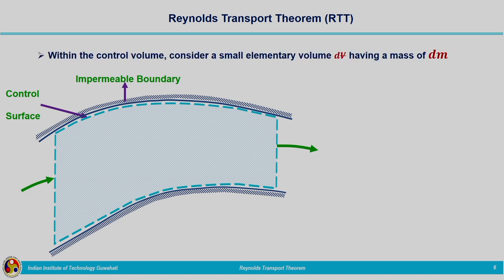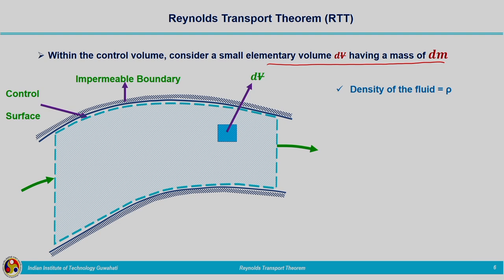We are going to consider an elementary volume dv having a mass of dm within the control volume. This is the elementary volume dv, and corresponding to this volume there will be a mass. Since density is assumed to be rho, the mass of the fluid element contained within volume dv is dm = rho × dv.